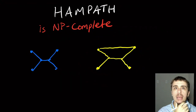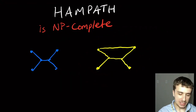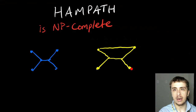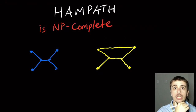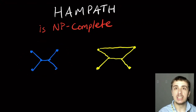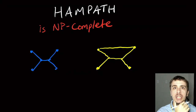In this yellow graph there is a Hamiltonian path that visits every vertex exactly once. If you start at one vertex, then go to that one, then there, there, there — you've visited every single vertex. Effectively, this one edge up here was the deciding factor about whether there's a Hamiltonian path or not.